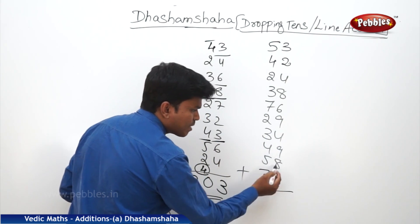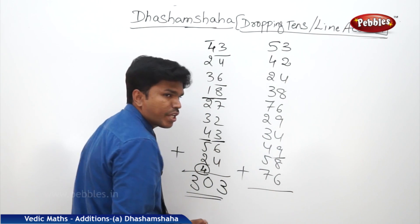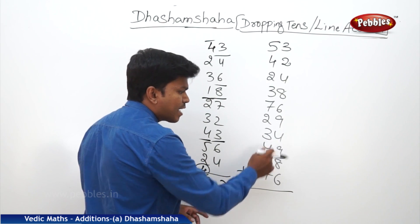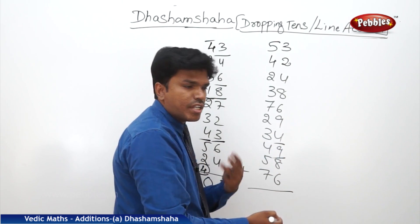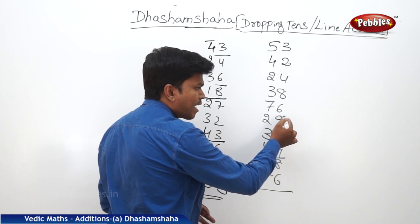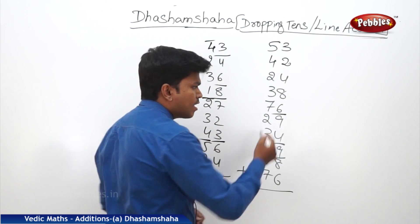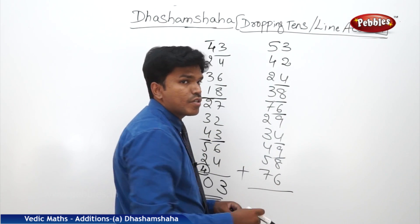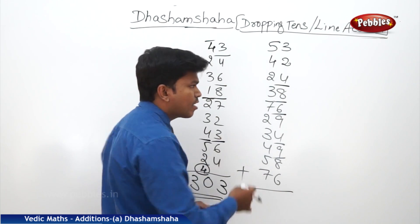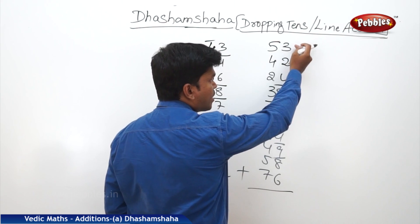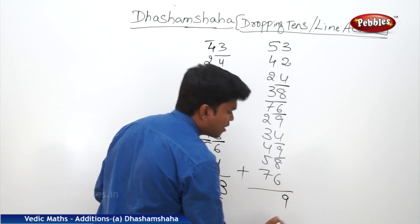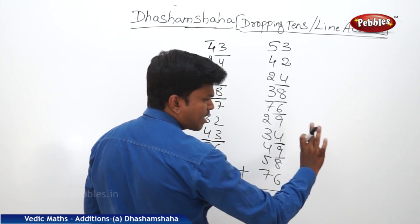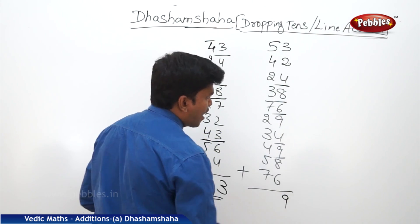Start from the right side. 6 plus 8? 14 — remaining is 4. Carry 4 to the next number. 4 plus 9? 13 — drop 10, carry 3. 3 plus 4? 7. 7, 9? 16 — remaining 6. 6, 6? 12 — drop 10, remaining 2. 2 plus 8? 10 — remaining 0, start freshly. 4 plus 2? 6. 6 plus 3? 9. Remaining lastly is 9. Write 9 here. Count the tens — 2 at a time: 2 plus 3? 5. Carry 5 to the next line.